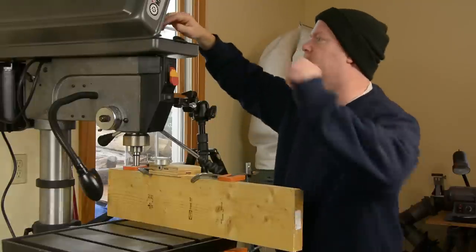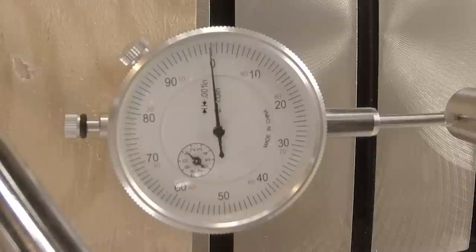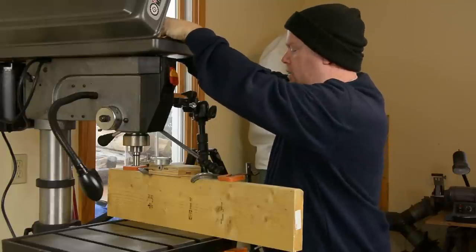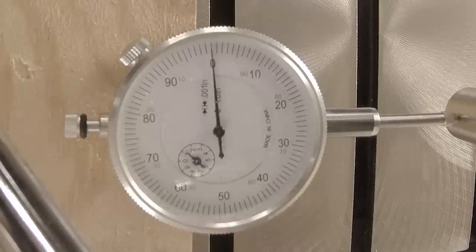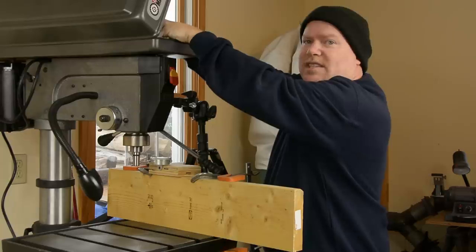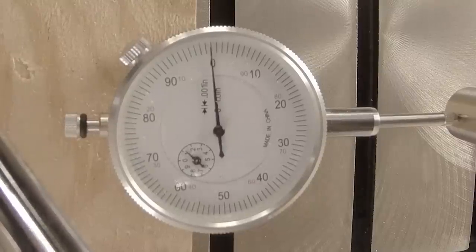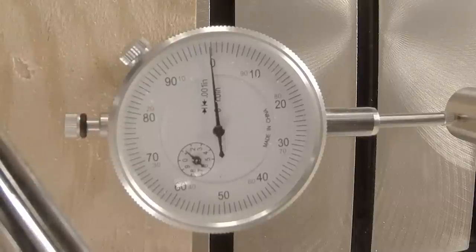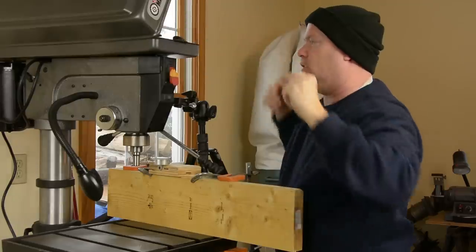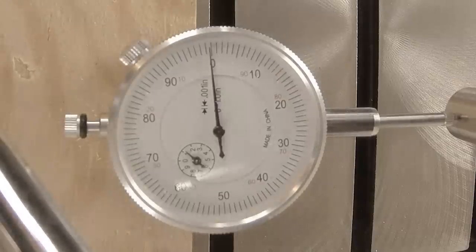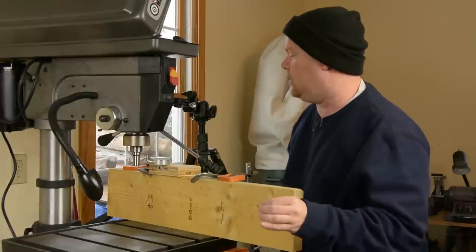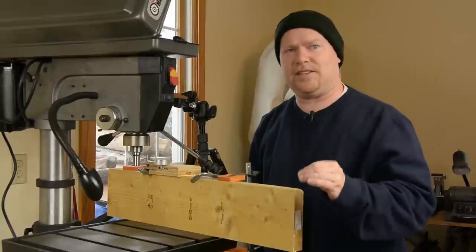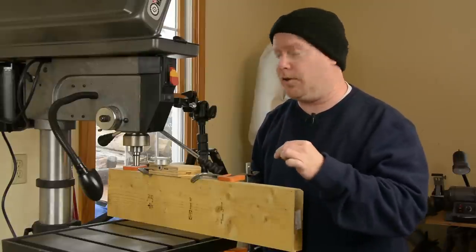So here we are at the zero point. Let's go ahead and crank this bad boy around. Here we are at about three o'clock. That's six-ish. There's nine o'clock. And all the way back around. What you're seeing on the dial indicator is very, very minor movement. It's less than a thousandth of an inch the whole way around there.